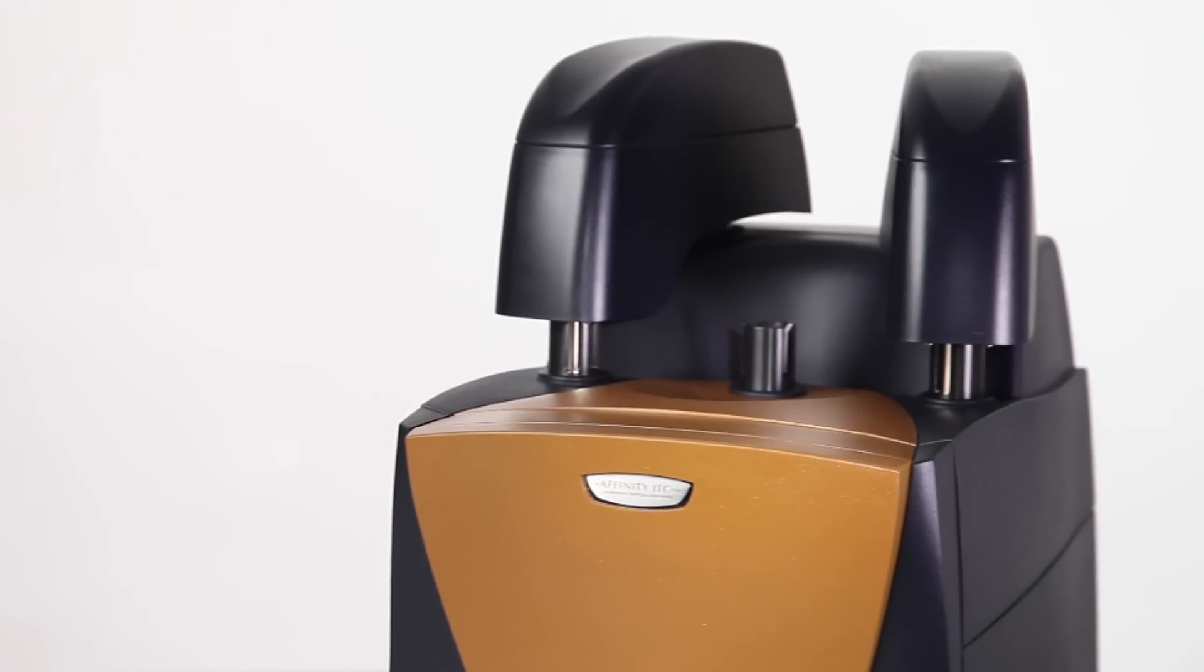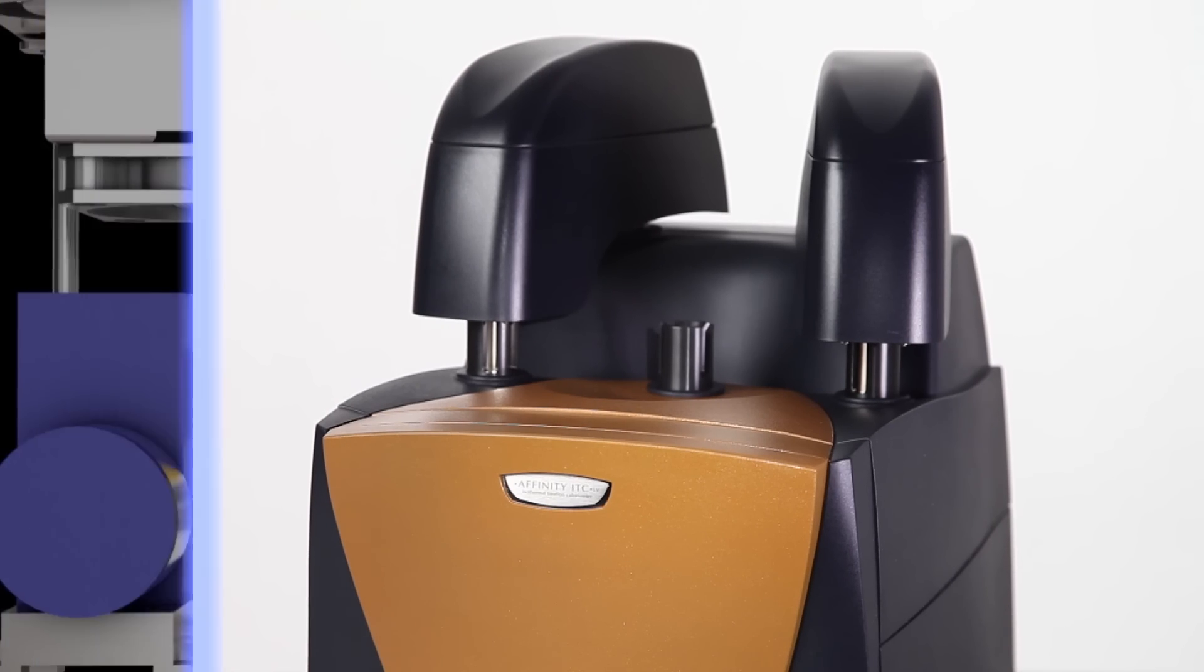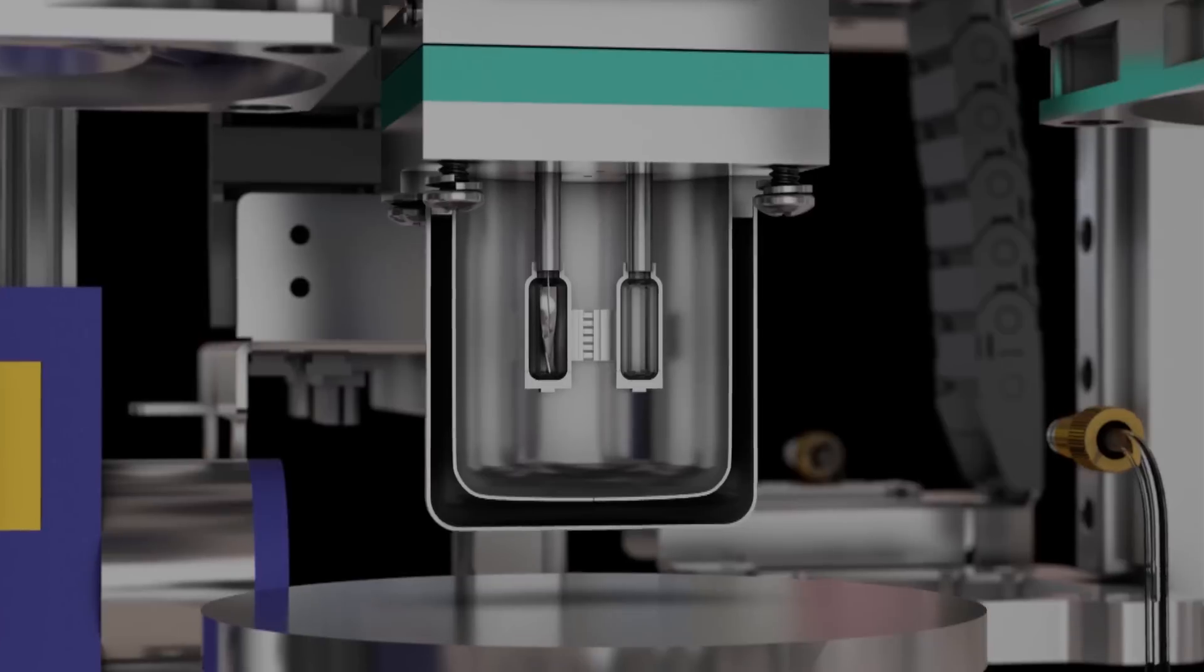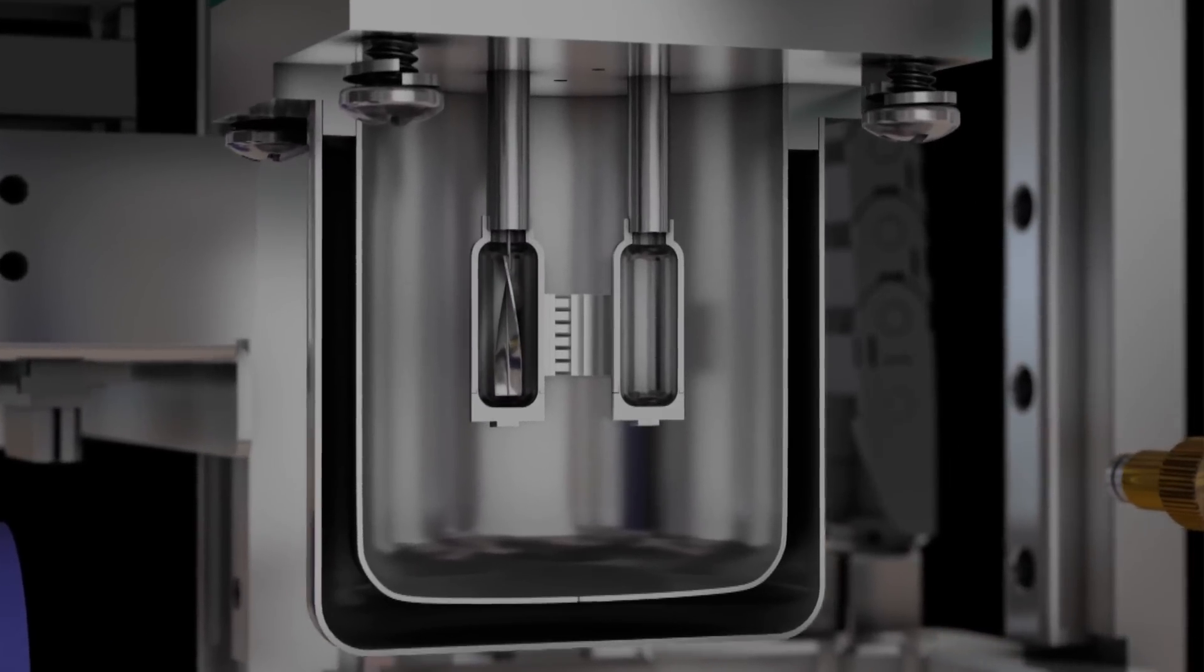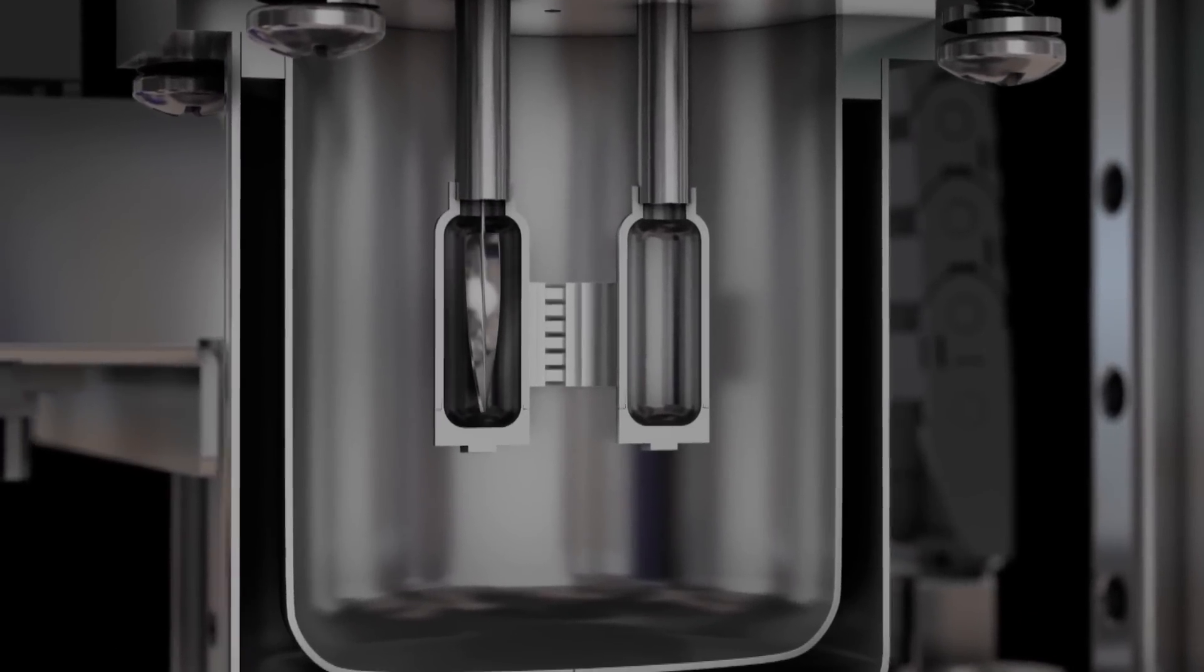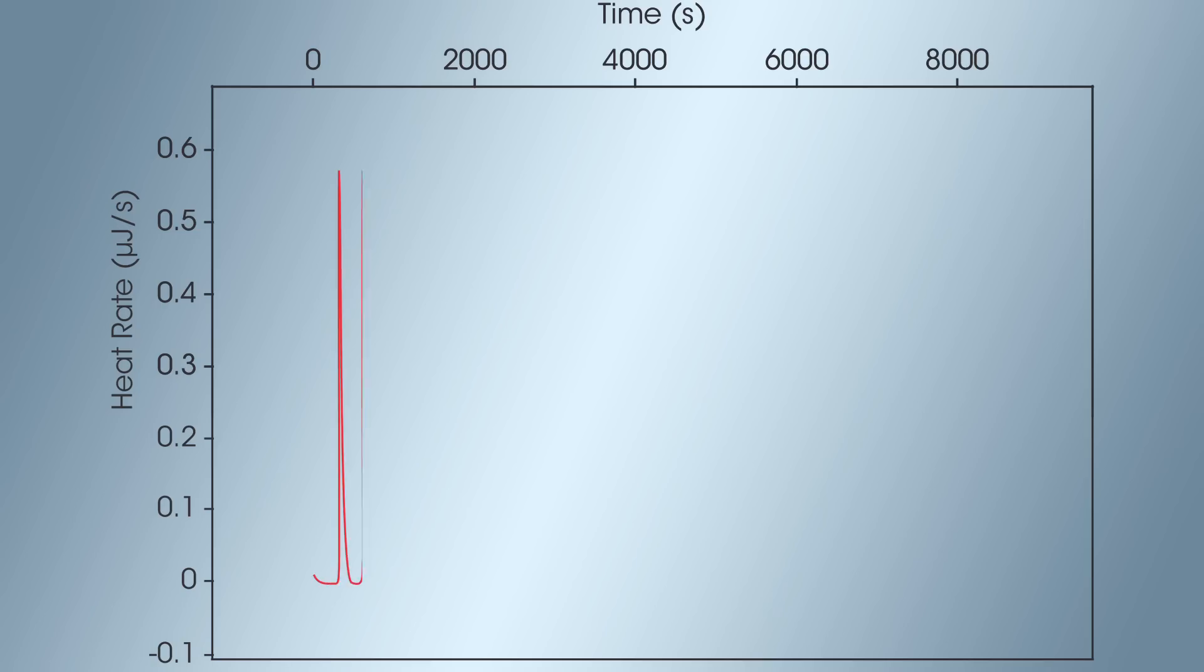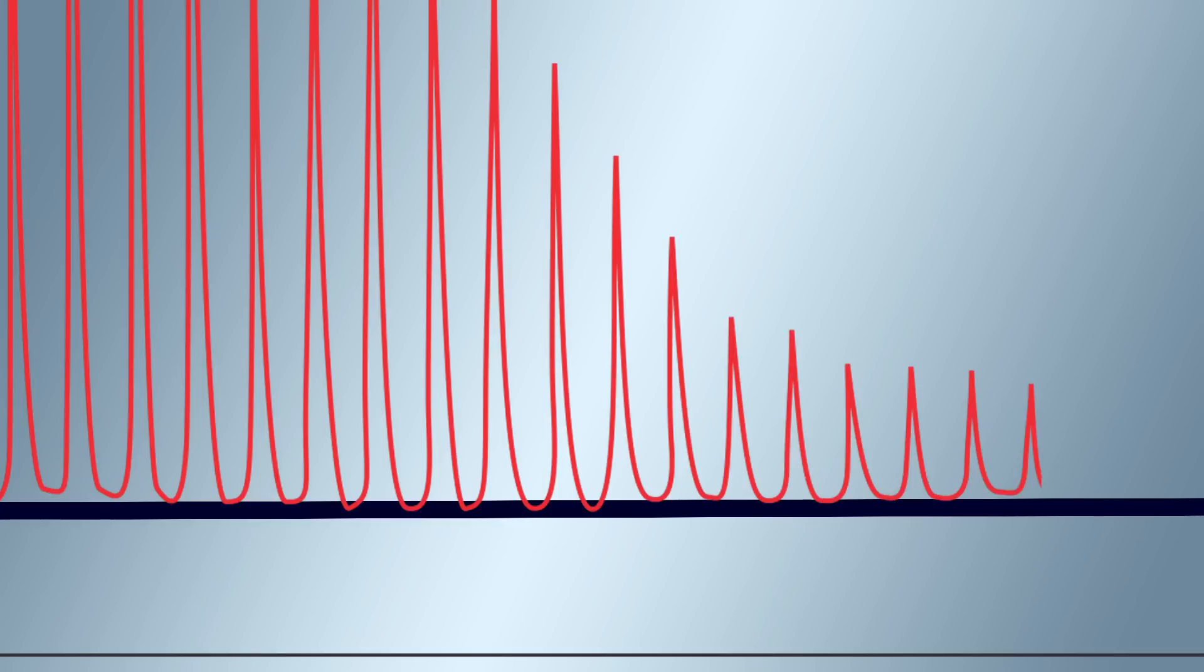The Affinity ITC is a true isothermal power compensation instrument. Thermoelectric elements precisely control temperature and provide the highest sensitivity available for ITC. With the most precise isothermal control available, you're guaranteed the most accurate measurements with none of the baseline drifts seen in inferior ITC instrument designs.